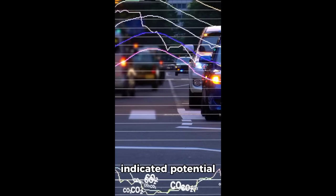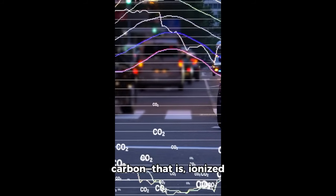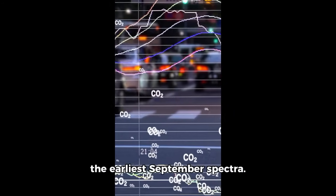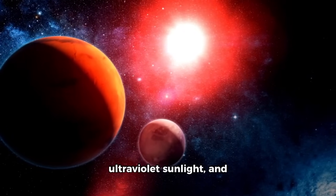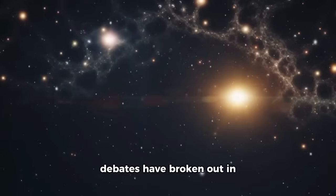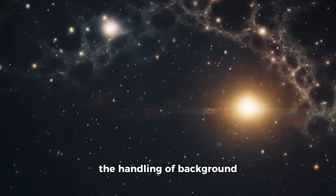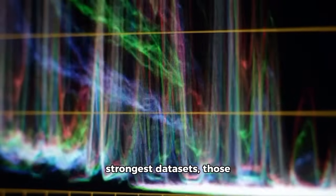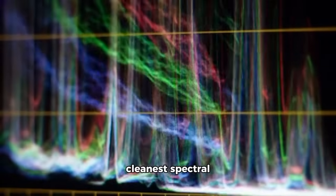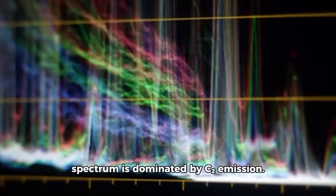The specifics are not agreed upon by all. Some teams have indicated potential contributions from C+, ionized carbon monoxide, carbon monoxide, or the cyanide CN radical, especially in the earliest September spectra. Additionally, they can glow green or blue under ultraviolet sunlight, and debates have broken out in peer-review threads about calibration scripts and the handling of background subtraction. Nevertheless, the strongest datasets, those with the widest and cleanest spectral coverage, consistently show that the visible spectrum is dominated by C2 emission.